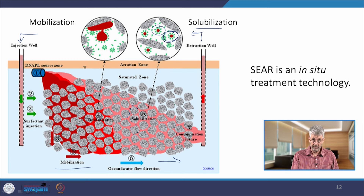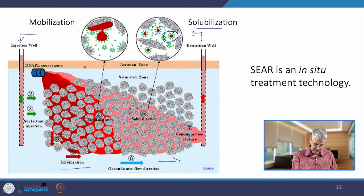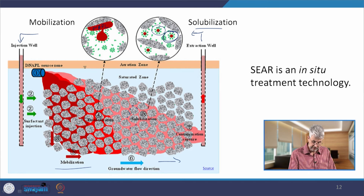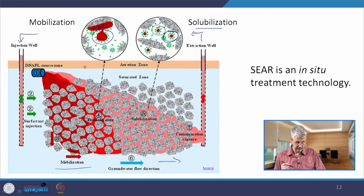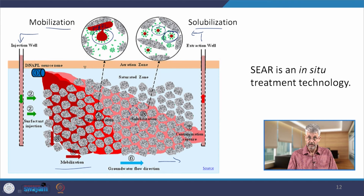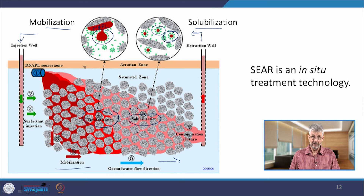On the other side, the surfactant does its other trick — it decreases interfacial tension between the NAPL (this red material here is NAPL, the non-aqueous phase liquid) and emulsifies it. You can see an emulsion forming — tiny droplets suspended in the aqueous phase. This is what we call mobilization. What we get is a plume of highly concentrated solubilized contaminant and a plume of highly mobilized emulsified contaminants.